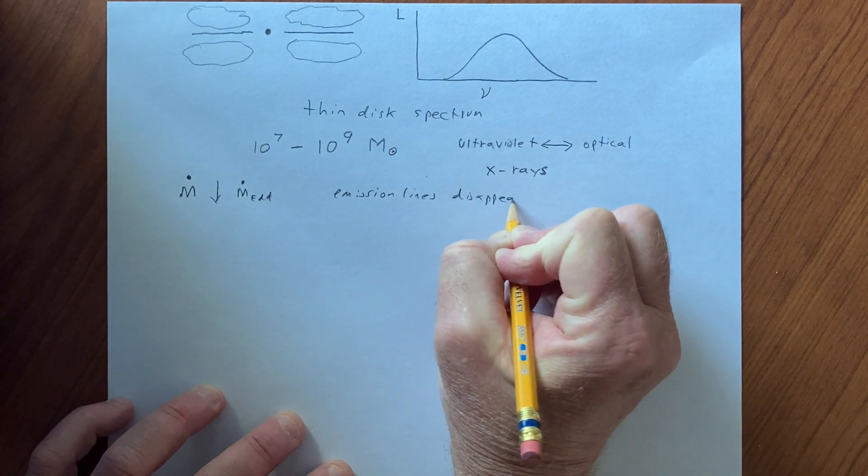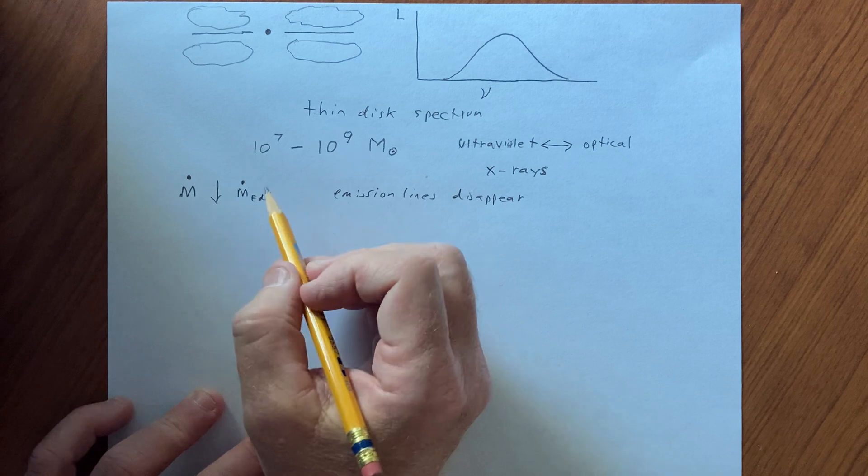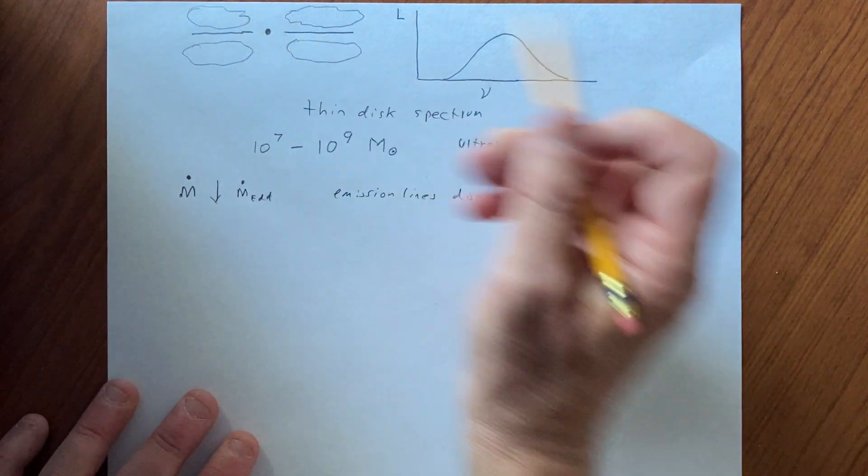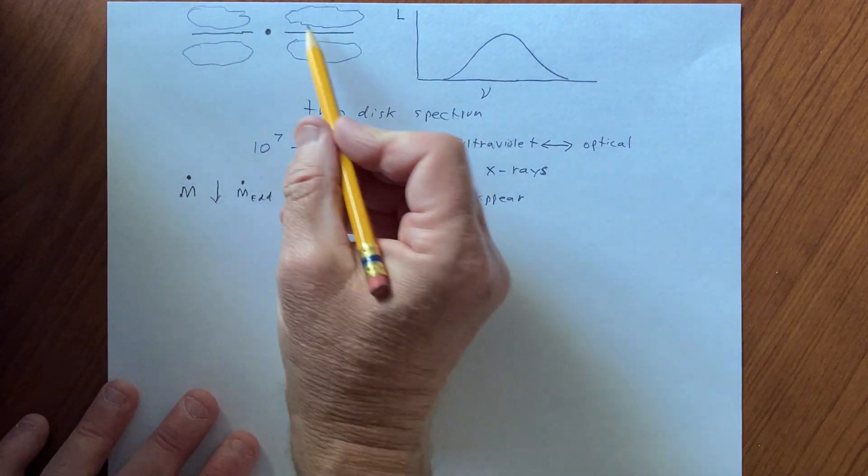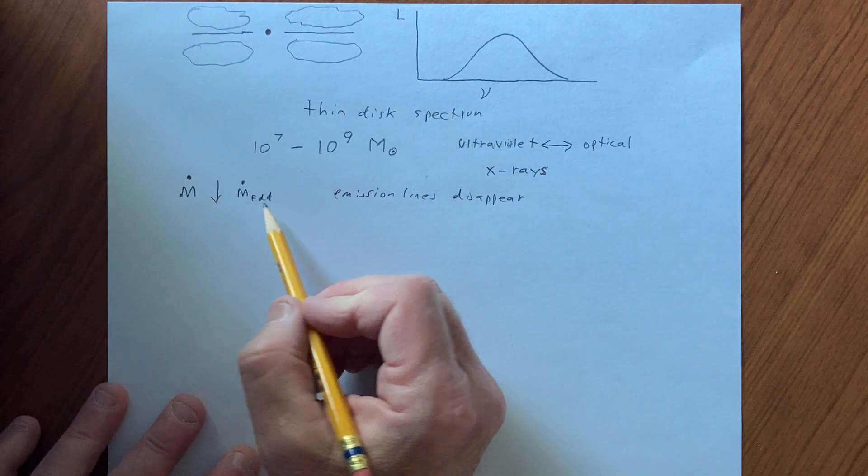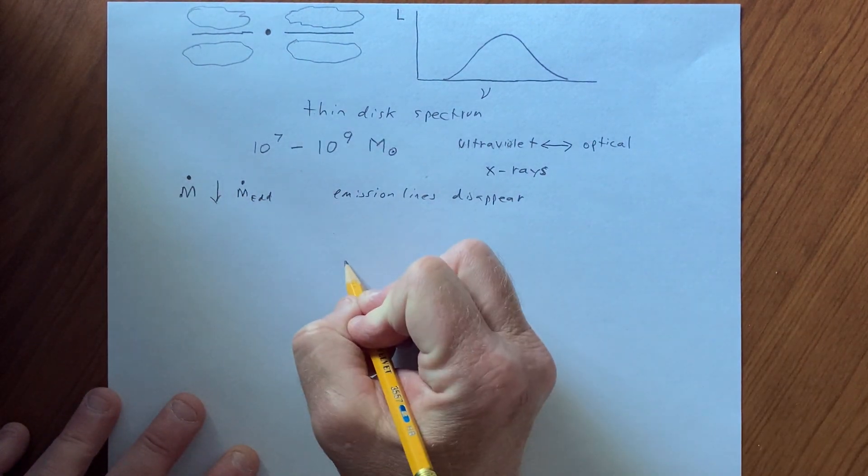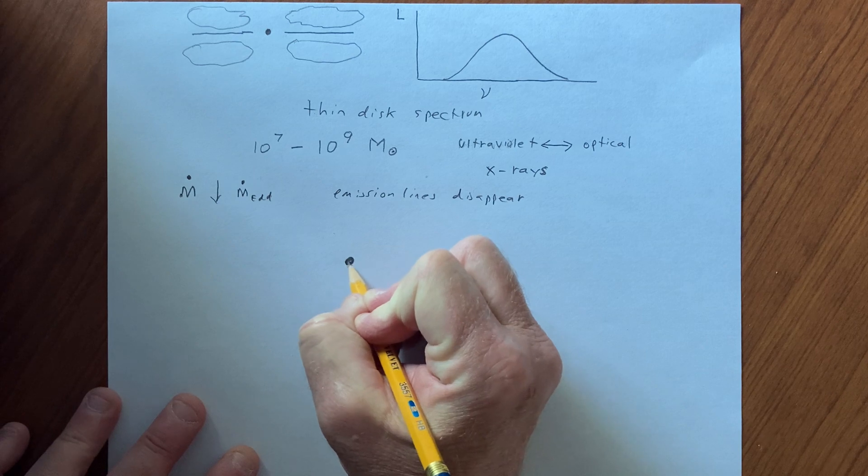And so there seems to be a need for an understanding of what's going on with accretion as the accretion rates drop dramatically below the Eddington limit. And the idea, the theory that has emerged over the last few decades,